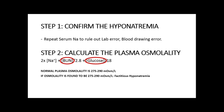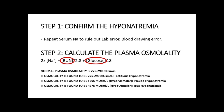If plasma osmolality is found to be normal (275–290 milliosmol/L), that is factitious hyponatremia — seen in hyperglycemia, where each 100 mg/dL rise in serum glucose causes serum sodium to fall by 1.6 mEq/L. If osmolality is greater than 295, the plasma is hyperosmolar — this is pseudohyponatremia, seen in hyperlipidemia and paraproteinemia. If osmolality is less than 275, the plasma is hyposmolar — this is true hyponatremia and is of clinical importance.